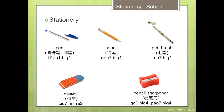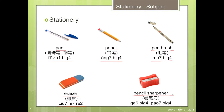We have a lot of stationery for writing, such as pen, pencil, pen brush, eraser, and pencil sharpener. Pen is called E-chu-bạc. Pencil is called Anh-bạc. Pen brush is called Mò-bạc. Eraser is called Chi-u-ni-dư. Pencil sharpener is called Cả-bạc or Pào-bạc.